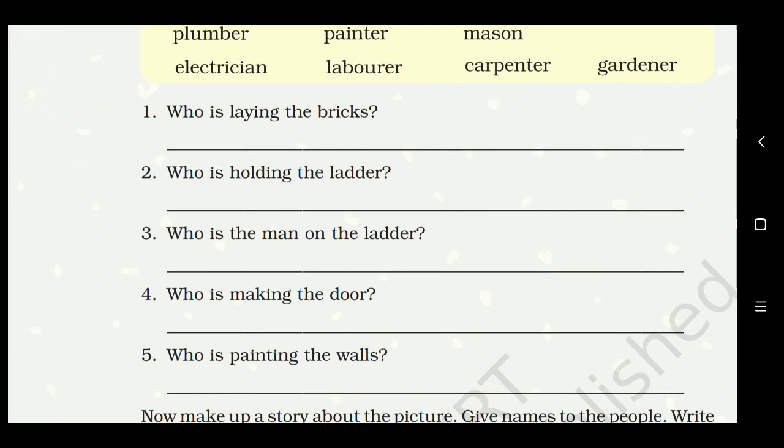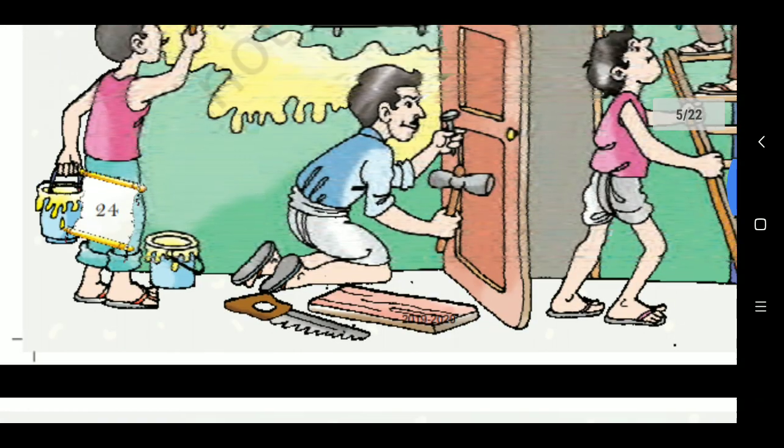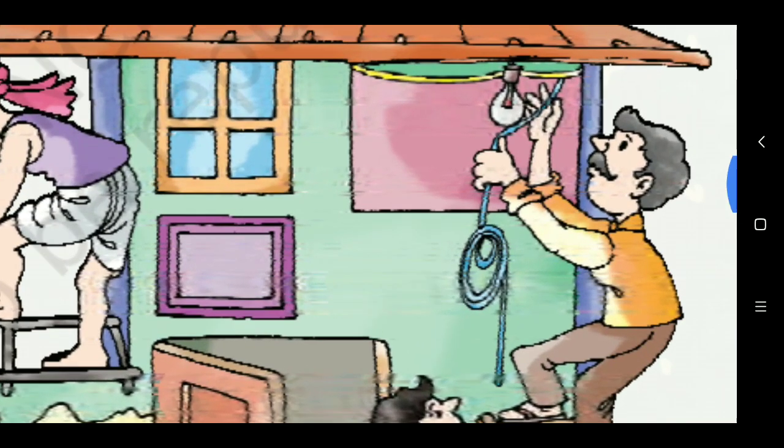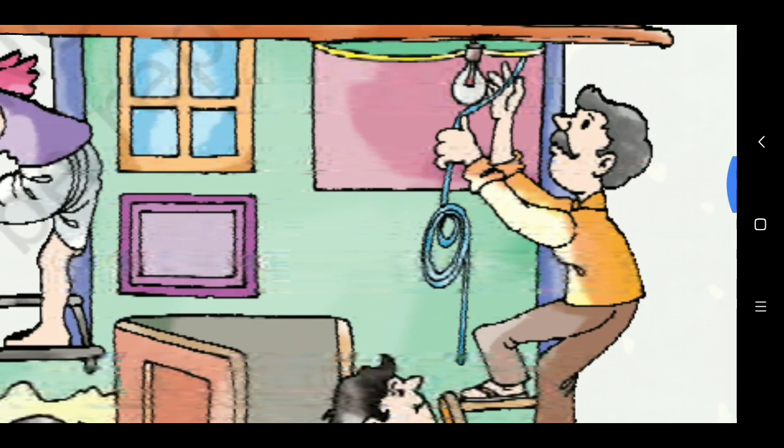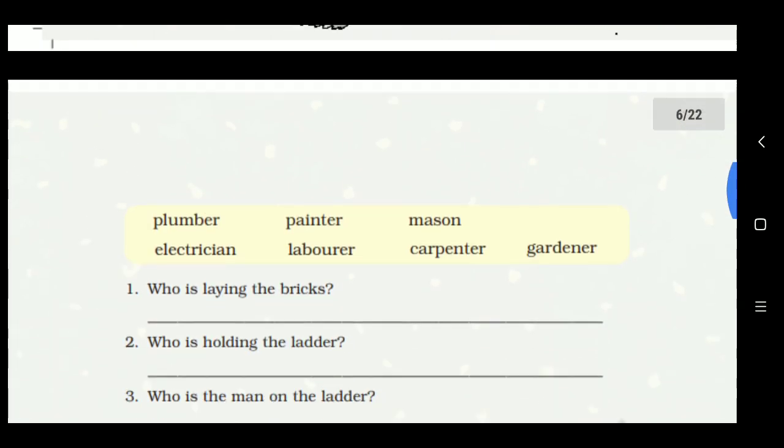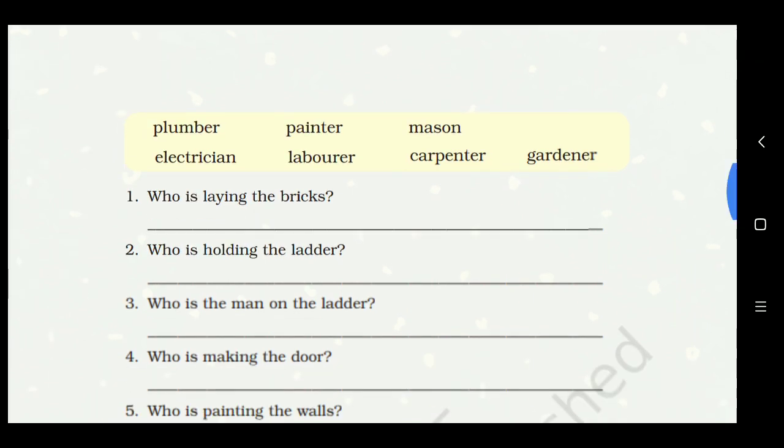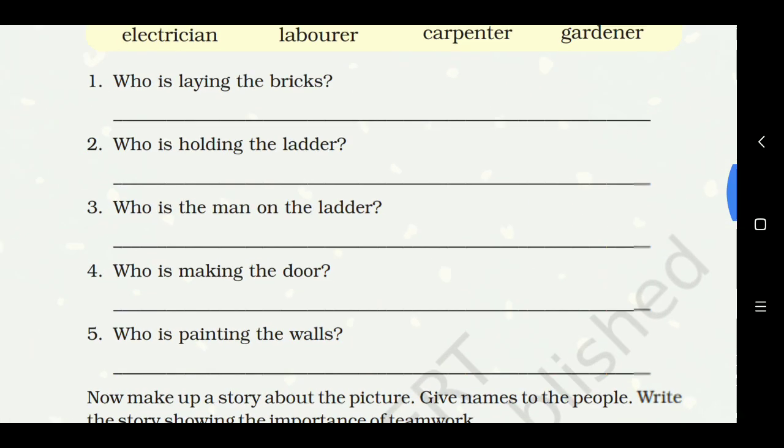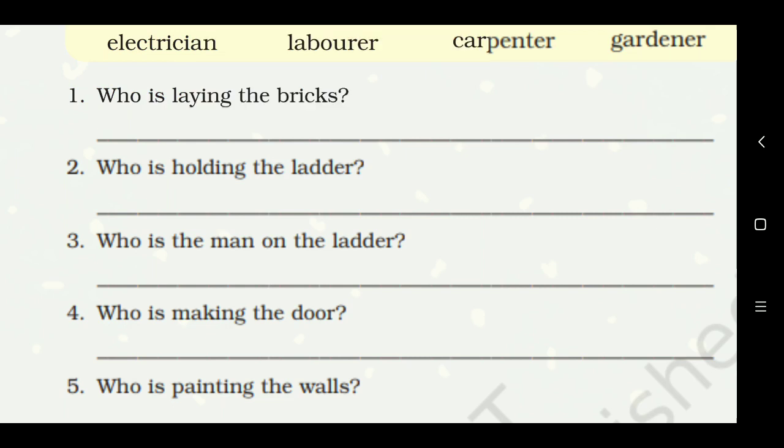Third question, who is the man on the ladder? Let's see who's the man on the ladder. This person is fixing the bulb with the help of some wires. He must be an electrician. The electrician is on the ladder.